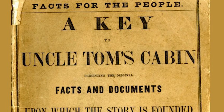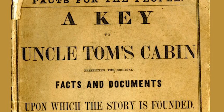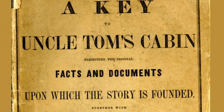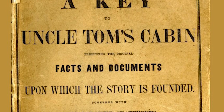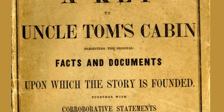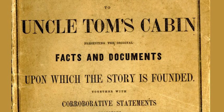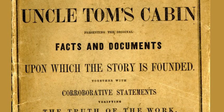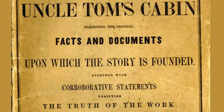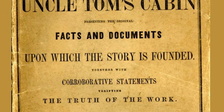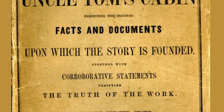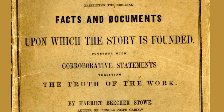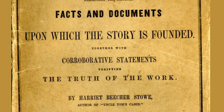Unsurprisingly, Stowe's book was not well received in the South. Many Southerners accused her of exaggerating the evils of slavery or simply focusing on the worst examples. To prove the legitimacy of the stories she told, Stowe wrote A Key to Uncle Tom's Cabin and published it in 1853. This non-fiction book provided a collection of primary documents detailing real stories of those who were enslaved and documenting the cruelties committed against them. The book reached bestseller status, selling 90,000 copies in its first month, though many Southerners still accused Stowe of over-exaggeration and misrepresentation.